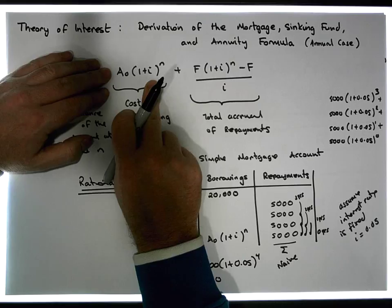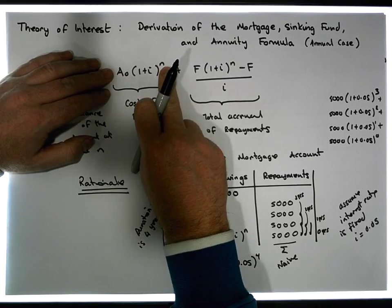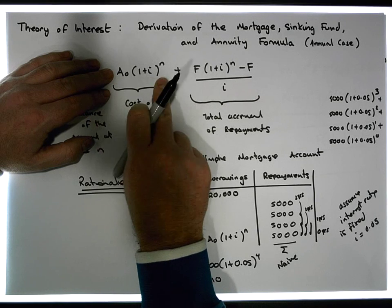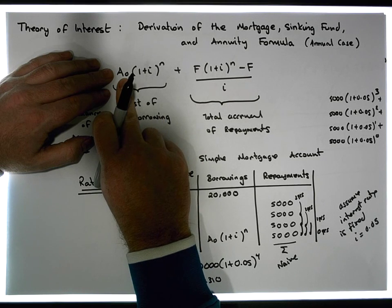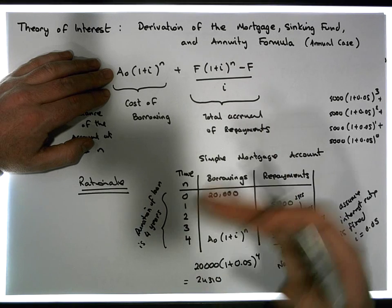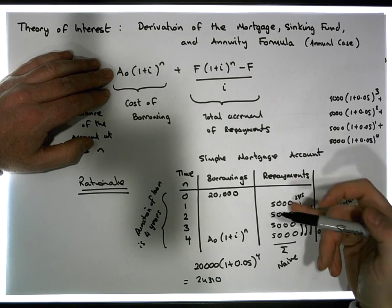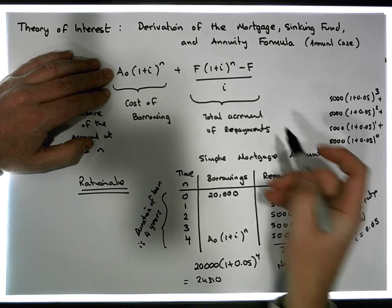You borrow an amount today over n years, well, the cost of that borrowing is it's the compound of how much you borrowed. And also, now, what we have here is for all of the repayments over all of the years, we've reduced these payments, what happens up into this particular formula here.